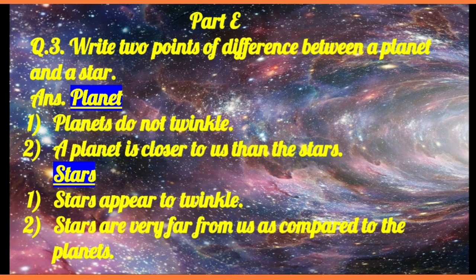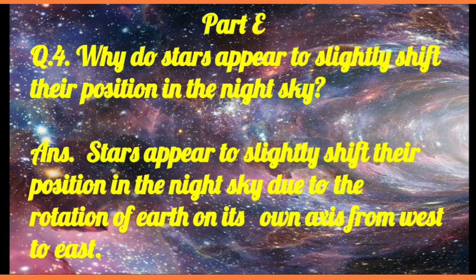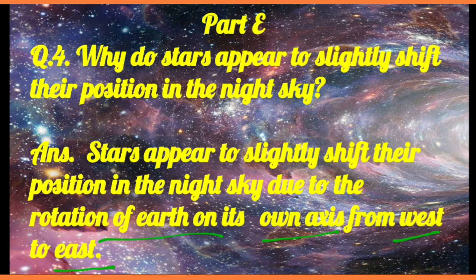Question number 3: write two points of difference between a planet and a star. First, a planet does not twinkle while stars appear to twinkle. Second, a planet is closer to us as compared to the stars, while stars are very far away from us compared to the planets. These are the two main differences.